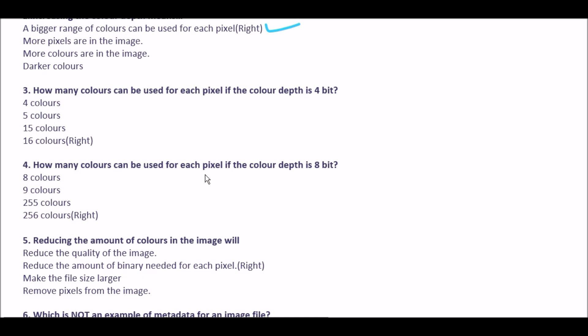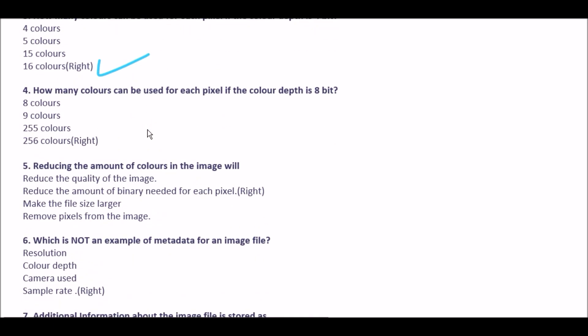Next question: how many colors can be used for each pixel if the color depth is 4-bit? Option A 4 colors, option B 5 colors, option C 15 colors, option D 16 colors. The right answer is 16 colors.